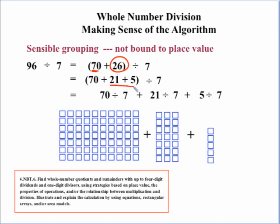Once we've done that, now, what about the 26? Well, I can break that down to 21 plus 5. So, now, using our distributive property, we are taking the 96 and we broke it down to three component parts. So, now, we actually have three division problems. We have 70 divided by 7 plus 21 divided by 7 plus 5 divided by 7.